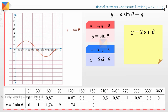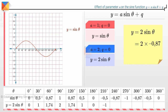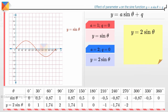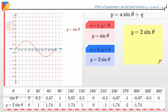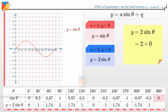At theta equals 210 degrees, y equals 2 times minus 0.5 equals minus 1. At theta equals 240 degrees, y equals 2 times minus 0.87 equals minus 1.74. At theta equals 270 degrees, y equals 2 times minus 1 equals minus 2. At theta equals 300 degrees, y equals 2 times minus 0.87 equals minus 1.74. At theta equals 330 degrees, y equals 2 times minus 0.5 equals minus 1. At theta equals 360 degrees, y equals 2 times 0 equals 0.